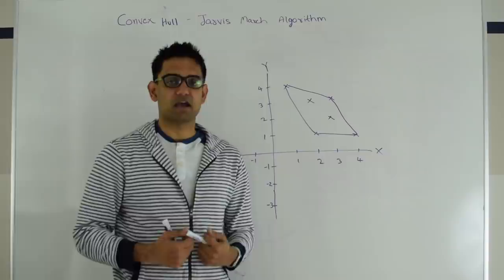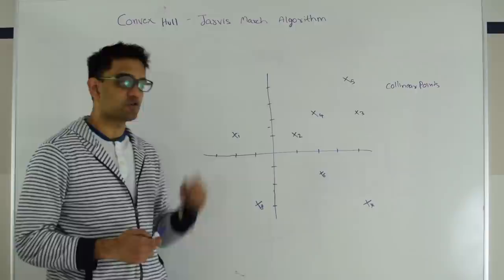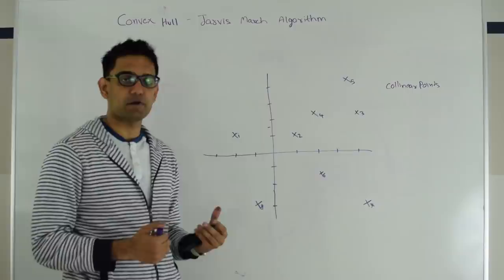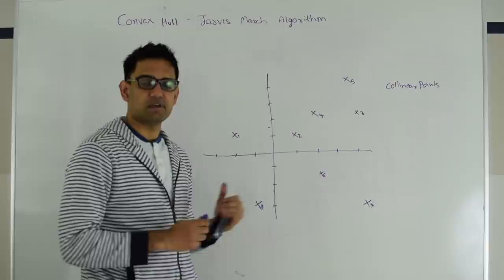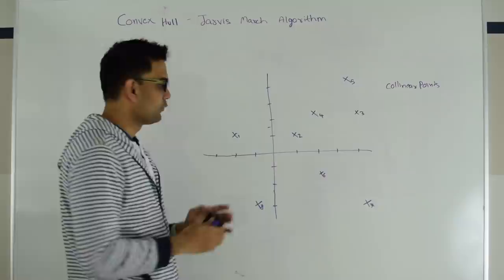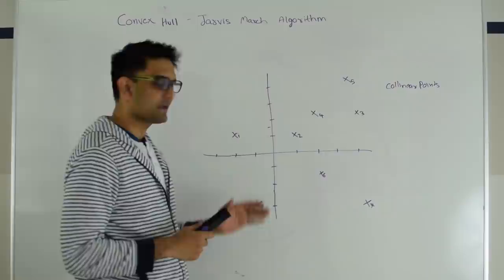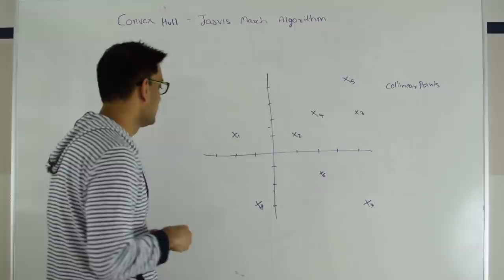Here we have a bunch of points from X1 to X8 and we are trying to draw a boundary around these points such that all the points are covered and the boundary is minimal. Also, this question is on LeetCode with the name 'Erect the Fence'. First, we start with the leftmost point. Here the leftmost point is X1, so X1 is definitely in our answer because the boundary has to go through it. This is our starting point.